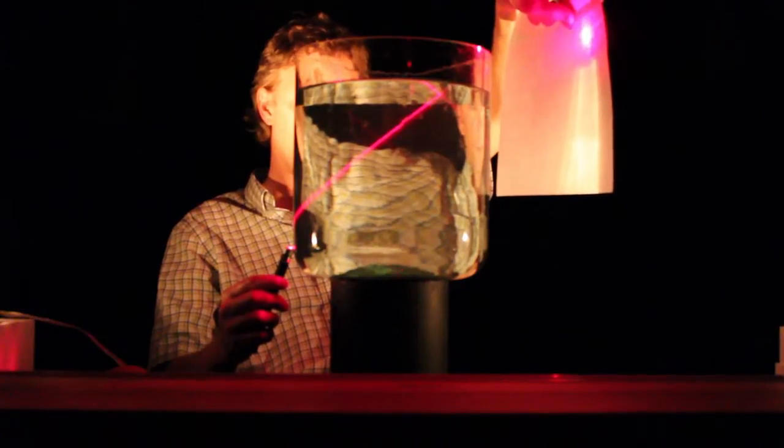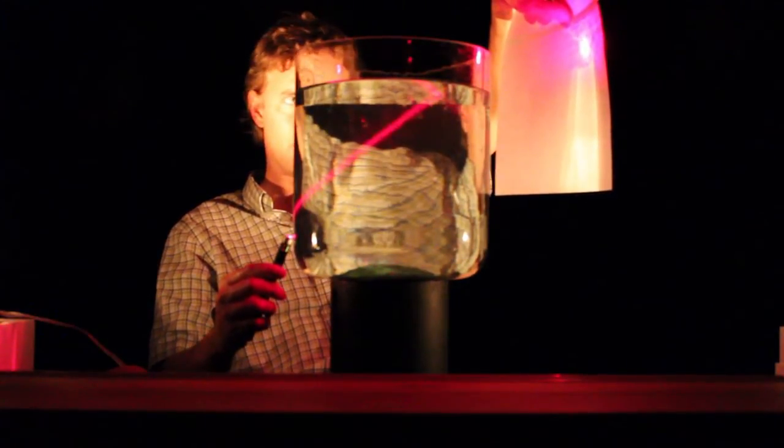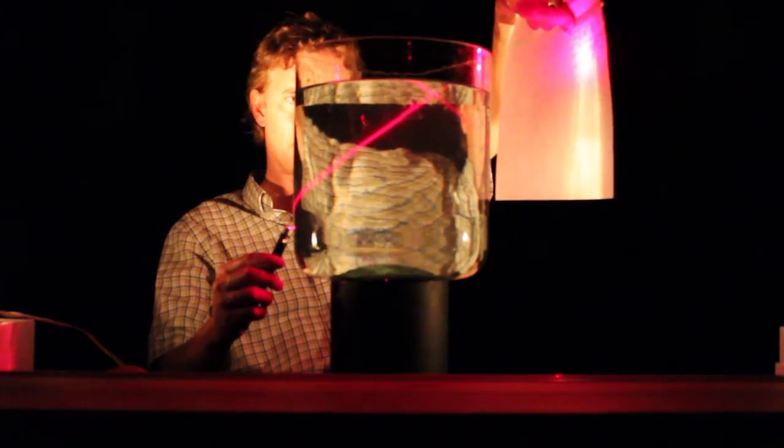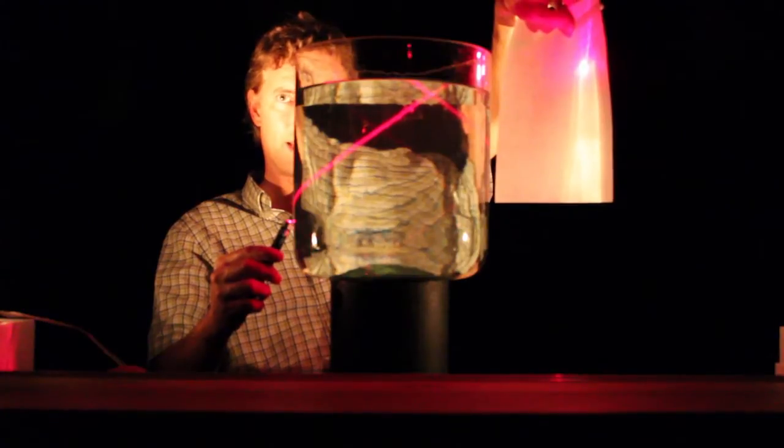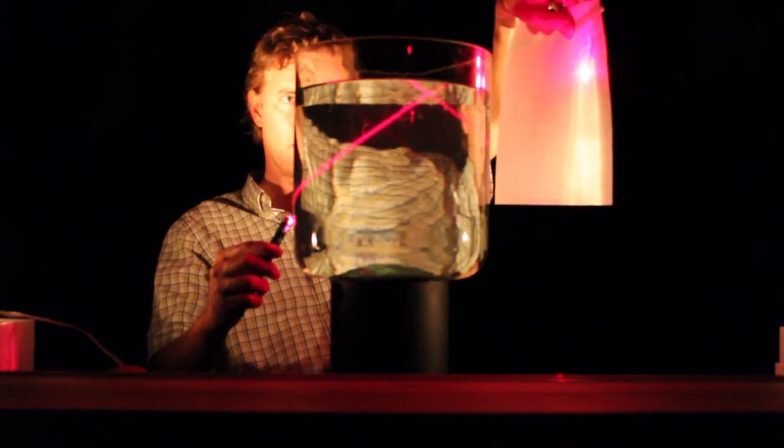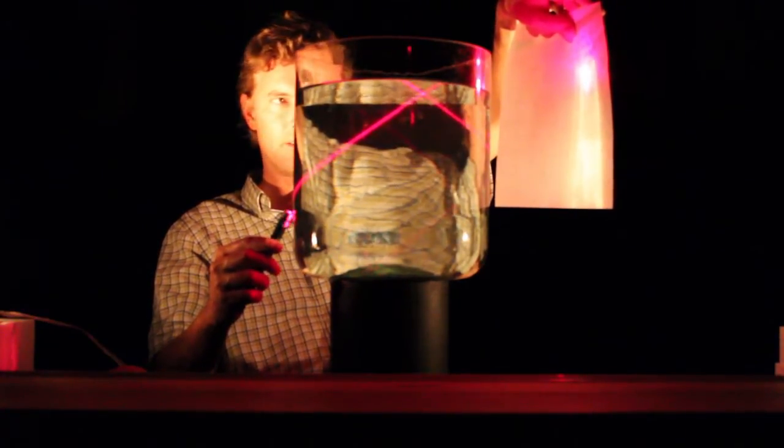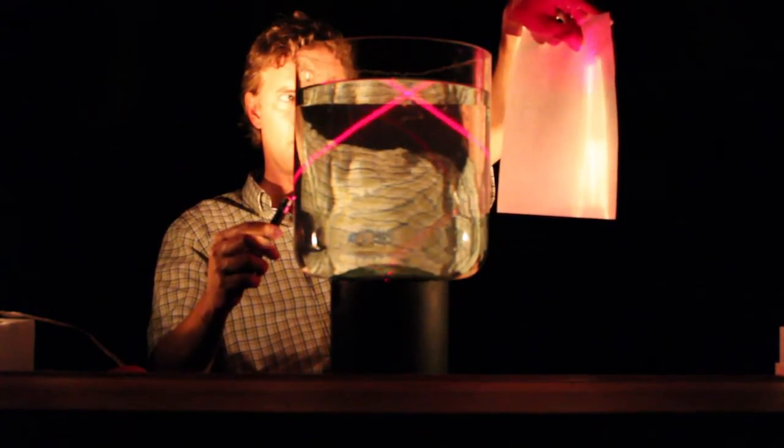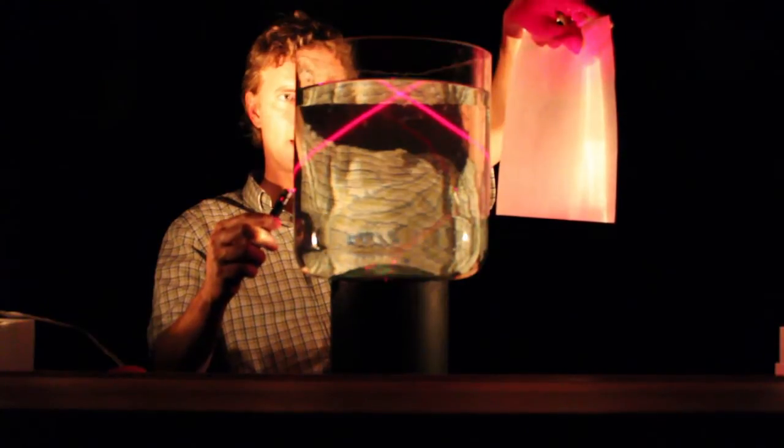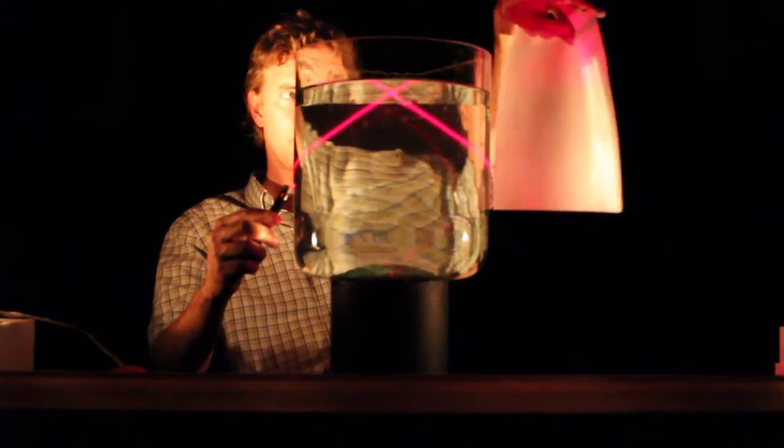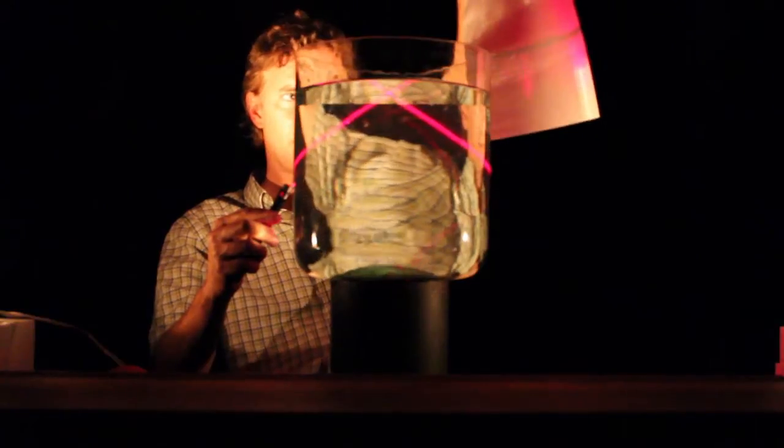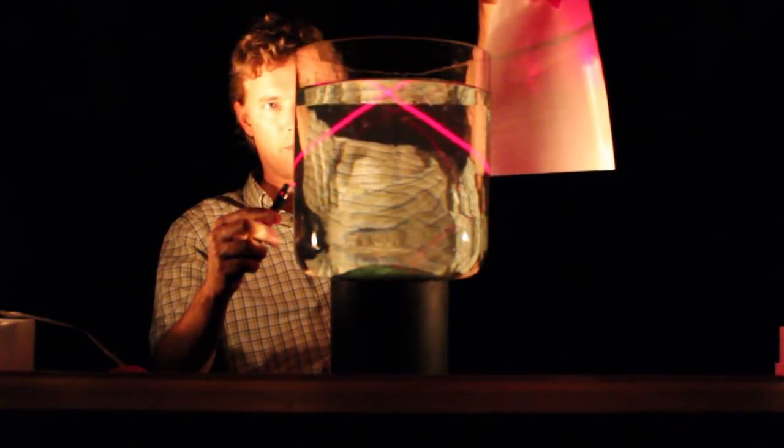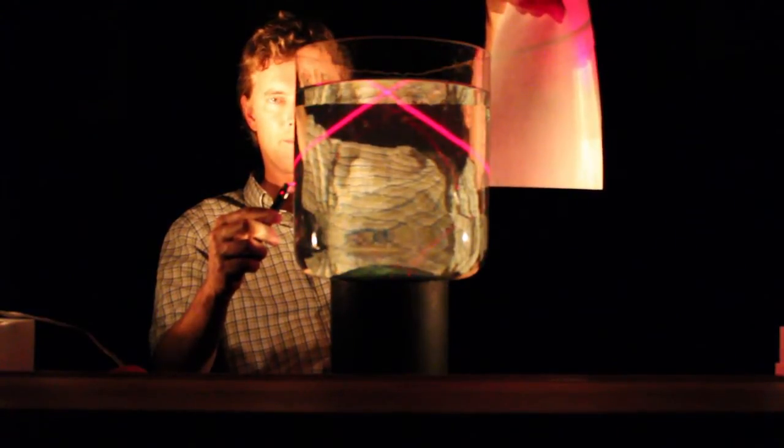Now as I start to increase the incident angle, we see that spot lowering on the piece of paper. And it's getting close to the level of the water, which means the transmitted angle is 90 degrees. And right about here, that spot goes away entirely. There is no transmitted spot anywhere above the surface of the water. It is all totally internally reflected inside the water.